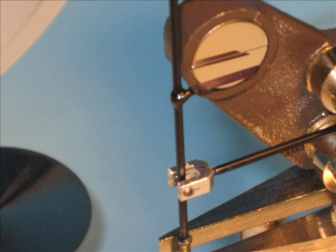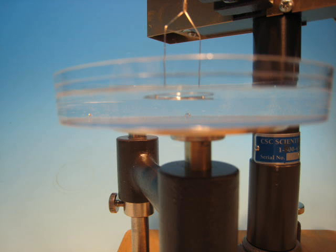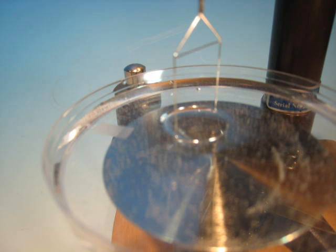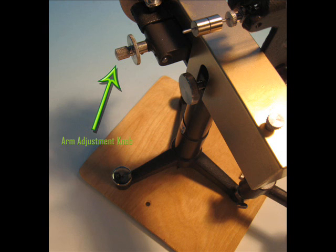With the ring below the surface of the sample, begin to lower the sample table with the sample table adjusting screw. When the ring approaches the surface, the pointer will move below the mirror line. At this point, use the arm adjustment knob to move the pointer back to the mirror line.